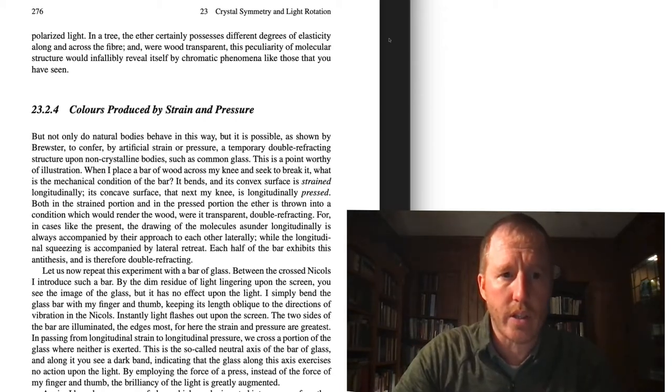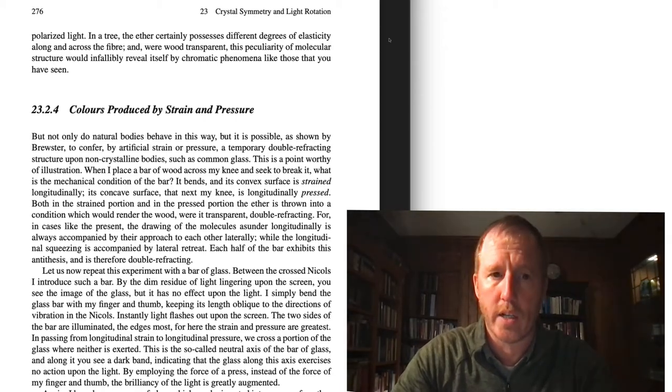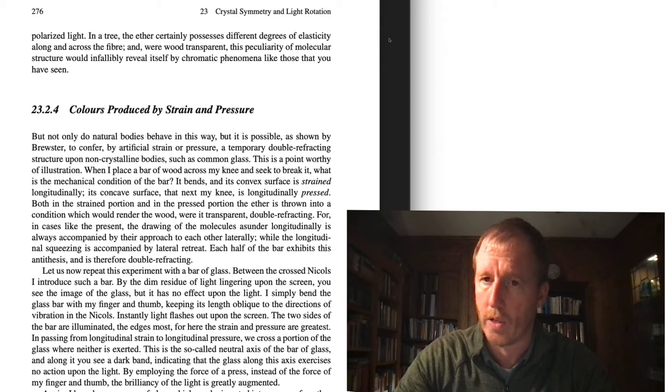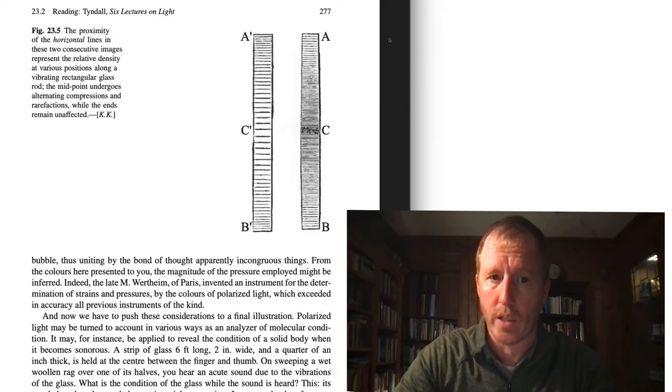So one of the things that he talks about is the colors that are produced by strain and pressure. Again, this is something that you did in lab this past week, where you took cross-polarizing filters and you put plexiglass between them. And it was dark because the polarizers were crossed. But then you squeezed the plexiglass, and you saw that in certain regions of the plexiglass, suddenly you could see light making its way through. What does this imply? Well, based on our analysis in the last lecture, it implies that the plexiglass, where it is under strain, becomes birefringent, so that it is able to rotate the plane of polarization of light.